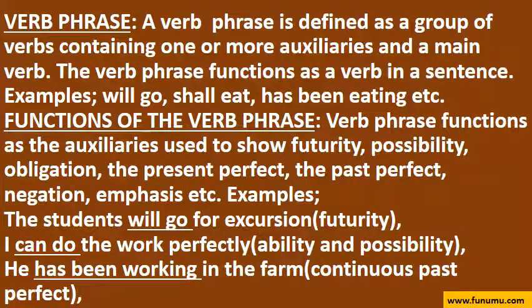Verb phrase. A verb phrase is defined as a group of verbs containing one or more auxiliaries and a main verb. The verb phrase functions as a verb in a sentence. Examples: will go, shall eat, has been eating, etc. Verb phrase functions use auxiliaries to show futurity, possibility, obligation, the present perfect, the past perfect, negation, emphasis, etc.